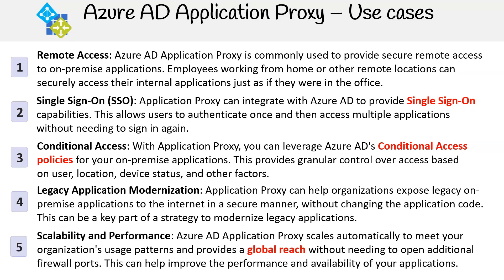Scalability and performance: Azure AD Application Proxy scales automatically to meet your organization's usage patterns and provides a global reach without needing to open additional firewall ports. This can help improve the performance and availability of your applications. In conclusion, Azure AD Application Proxy is like a security guard and a bridge, ensuring that your on-premises applications are both accessible and protected. Be sure to know this as it'll definitely appear on the exam.